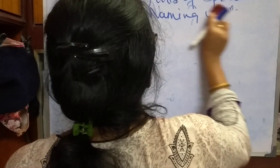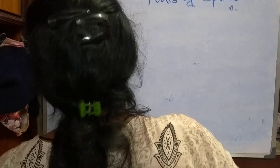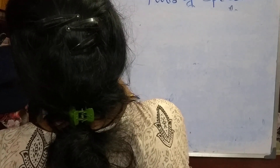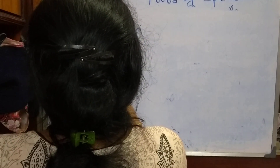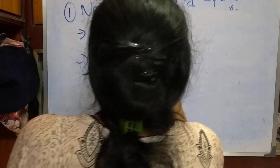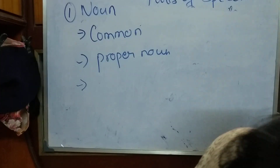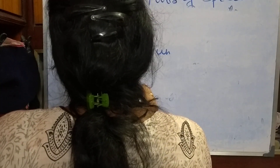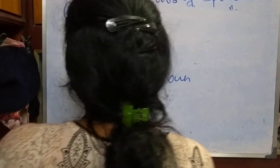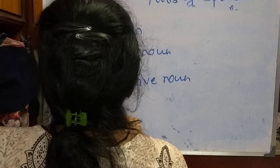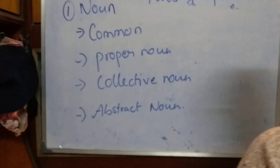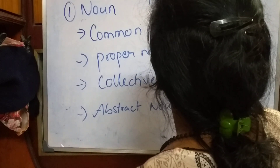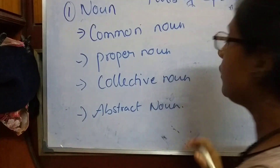The four parts of noun are: common noun, proper noun, collective noun, and abstract noun.